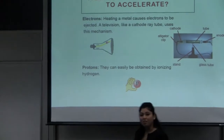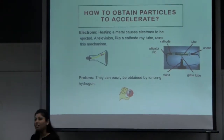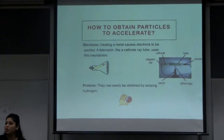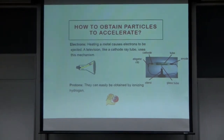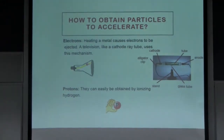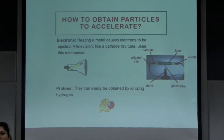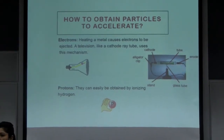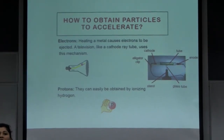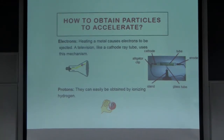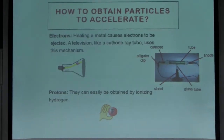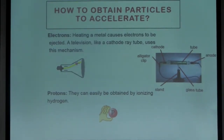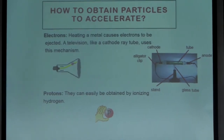The next important question: how do we obtain these particles? Where do we get them from? Charged particle accelerators accelerate electrons and protons, so where do we get electrons from? Electrons can be created by heating a filament or by heating metal. By heating metal, it causes electrons to be ejected from the surface of the metal. This mechanism is also used in cathode ray tubes.